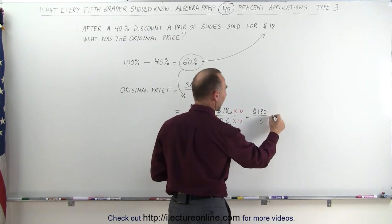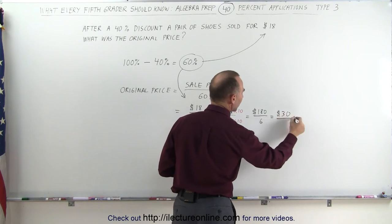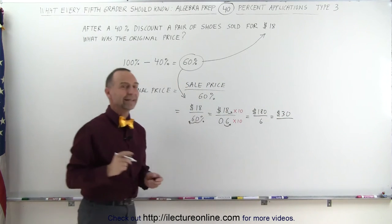Now 6 goes into 18 three times, and we still have the 0 left over, which means the original price is $30.